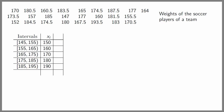Now we add a new column with the absolute frequencies F sub i of each of the intervals, which is the number of data that belong to each interval. In the interval [145, 155) we have 2 data points, so the absolute frequency is 2. In [155, 165) we have 5 data points, so the absolute frequency is 5. In [165, 175) we have 7 data points, so the absolute frequency is 7. In [175, 185) we have 8 data points, so the absolute frequency is 8. Finally, in [185, 195) we have 3 data points, so the absolute frequency is 3.